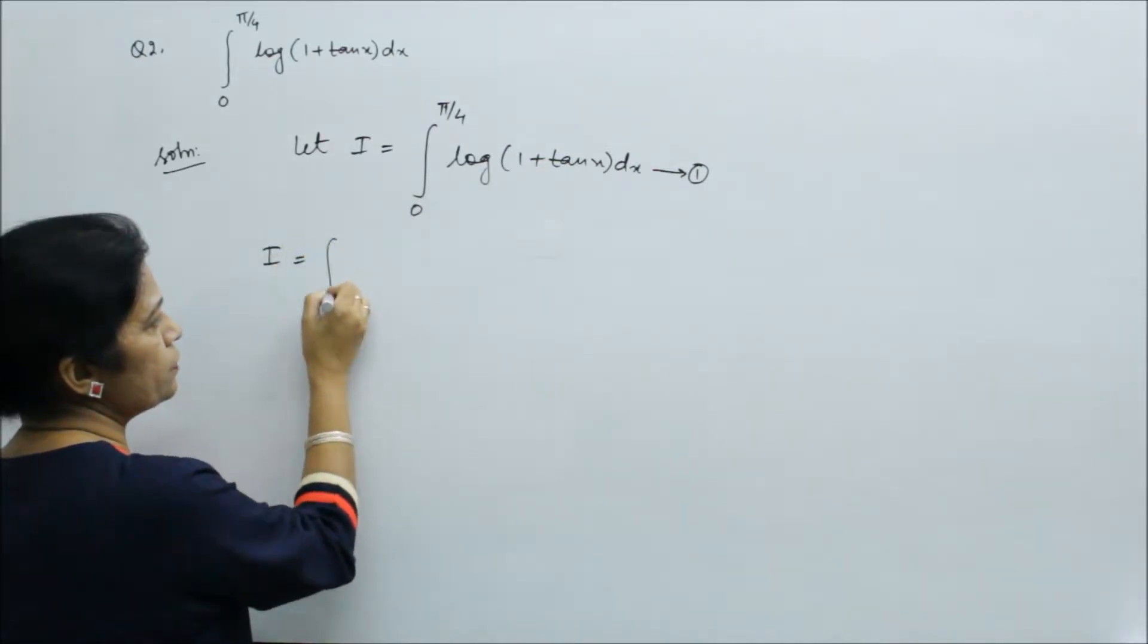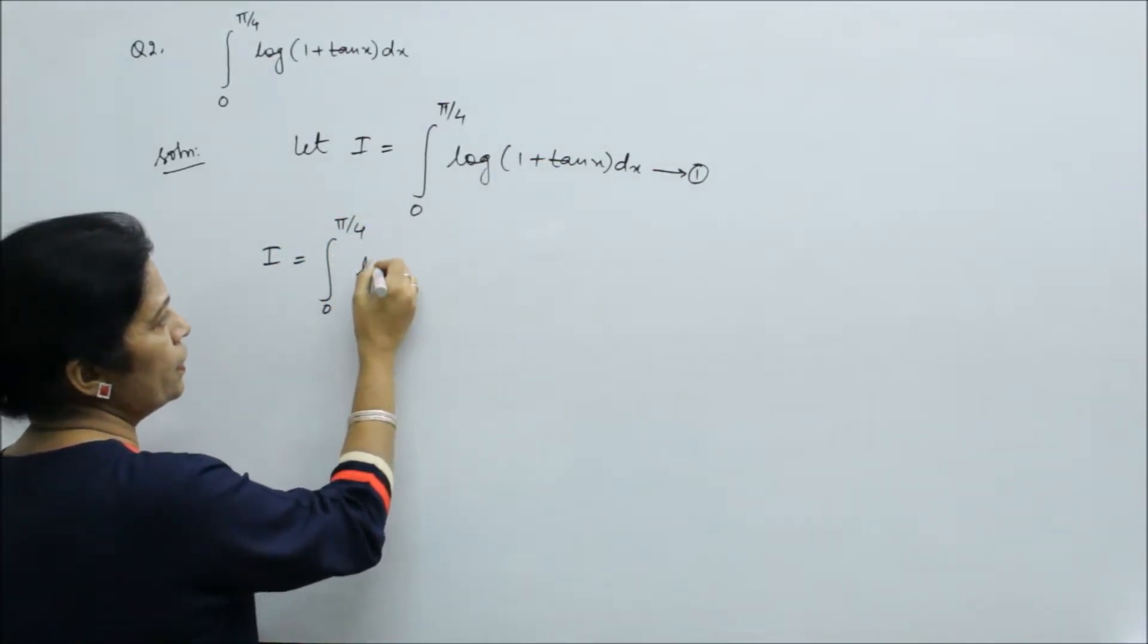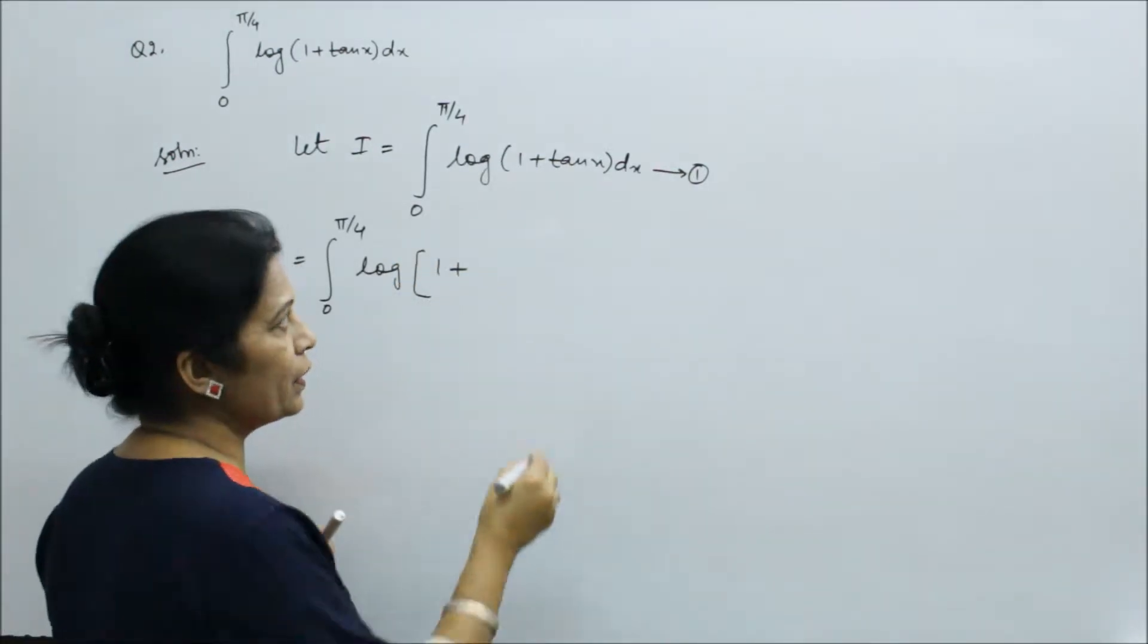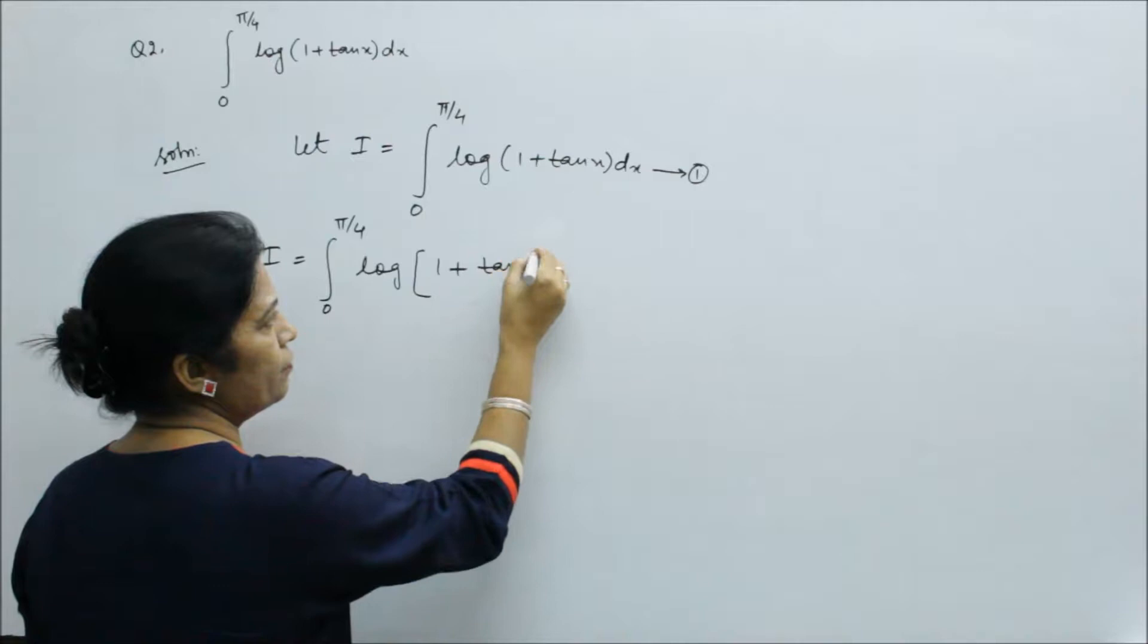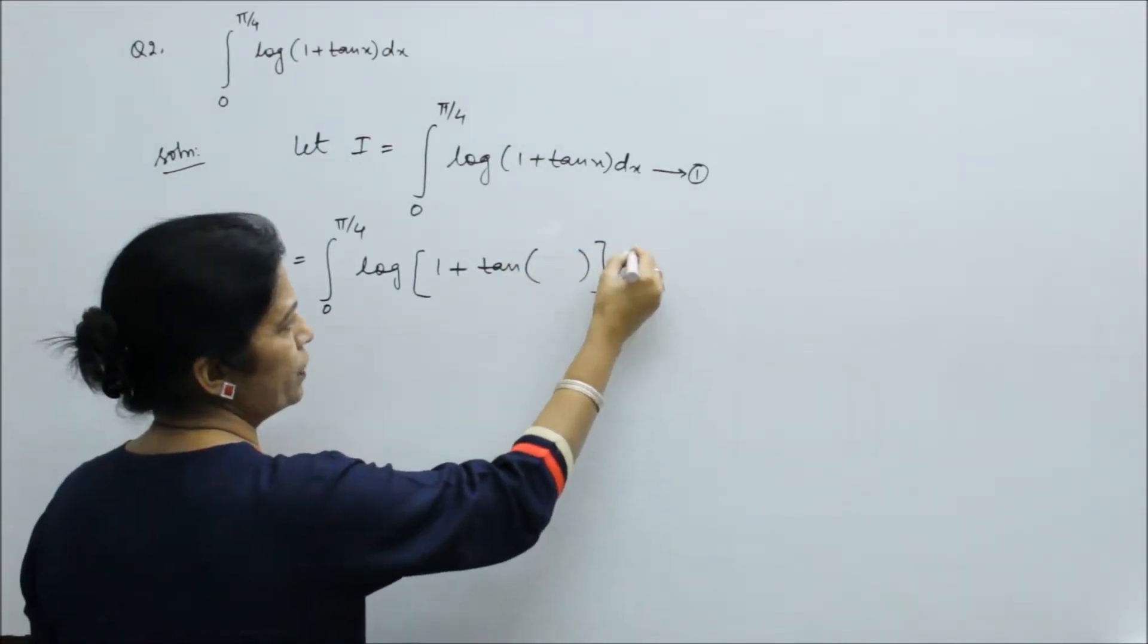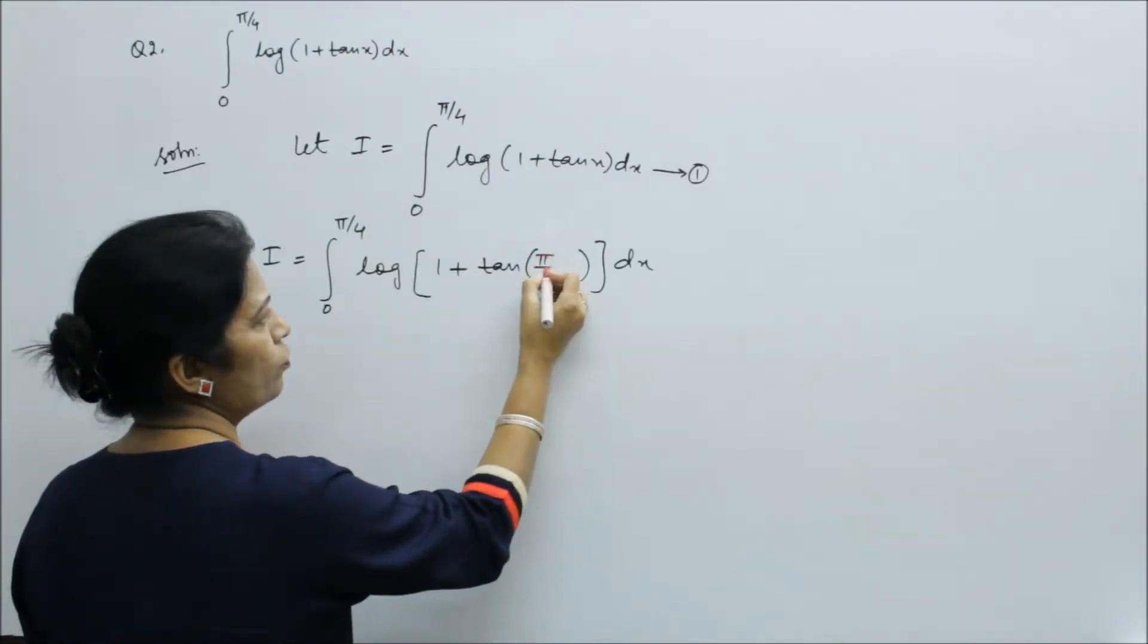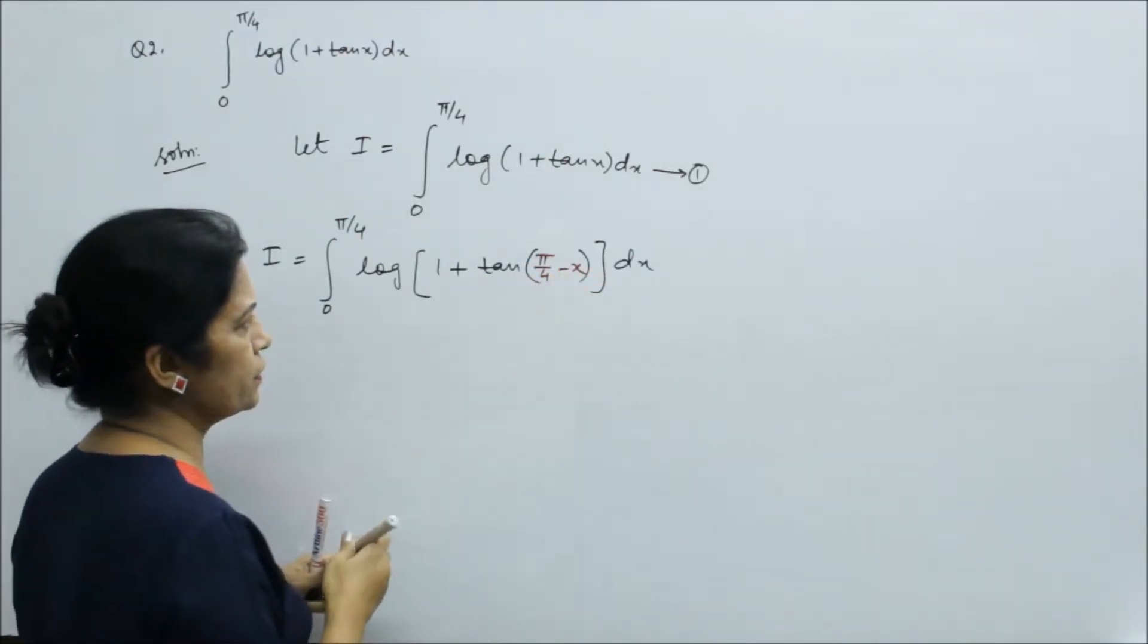So here we have the property we have applied. Where it is x, so we have the upper limit minus x. Use this property and here we have the space to write. Upper limit is π by 4, and minus x.